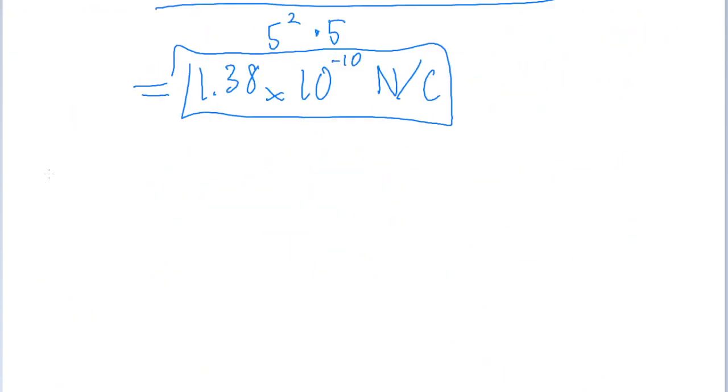So since the vector, the net vector, is pointing to the left, and we have a net x-axis pointing in the exact opposite direction, that means we're basically looking for an angle from the positive axis all the way over to the other side,